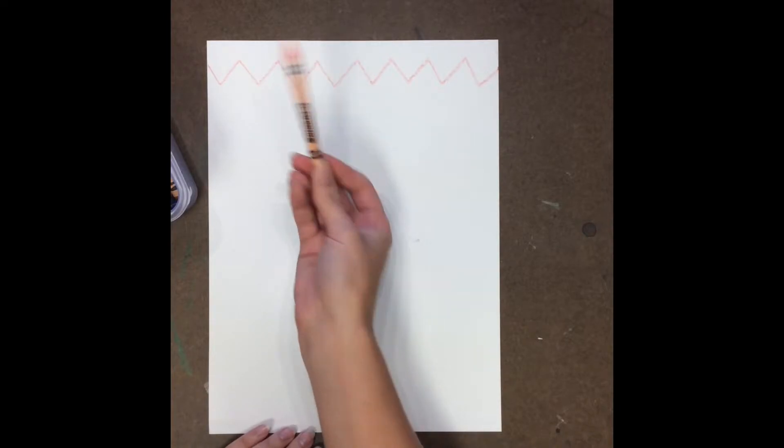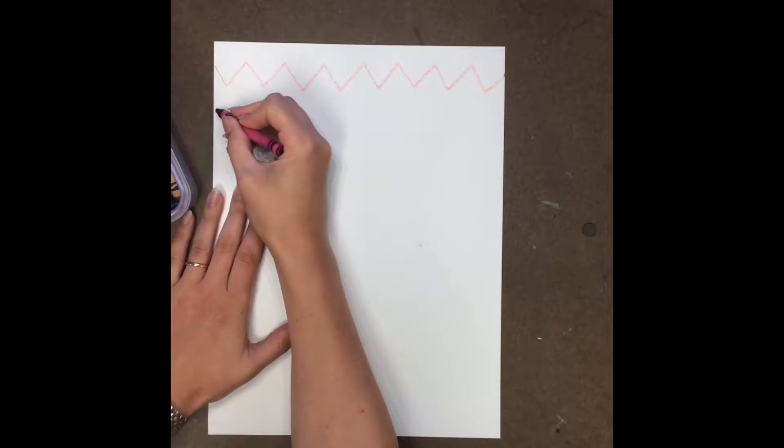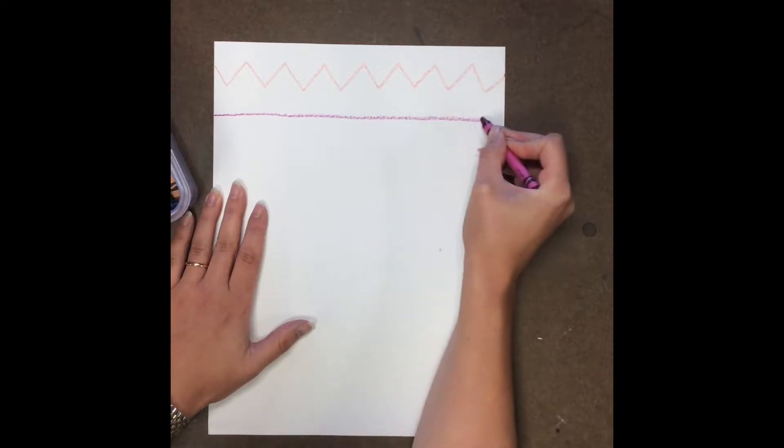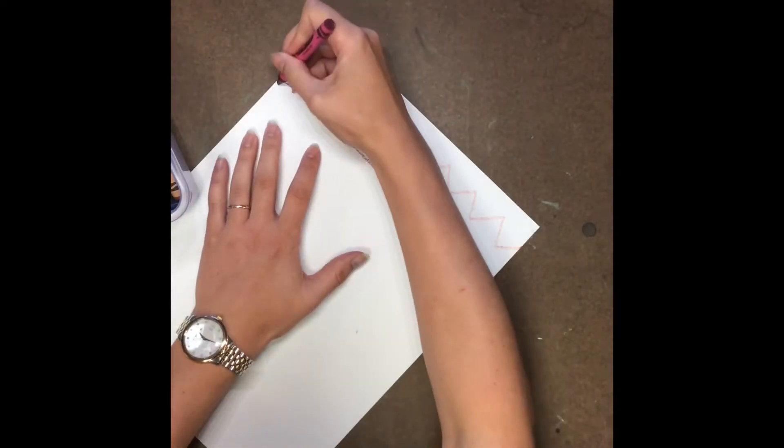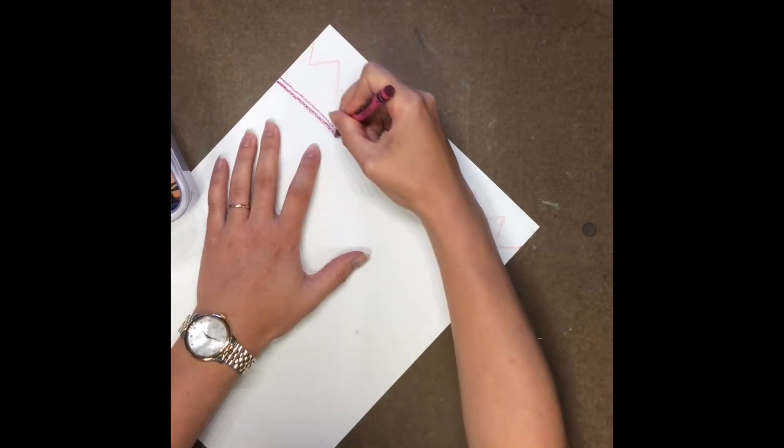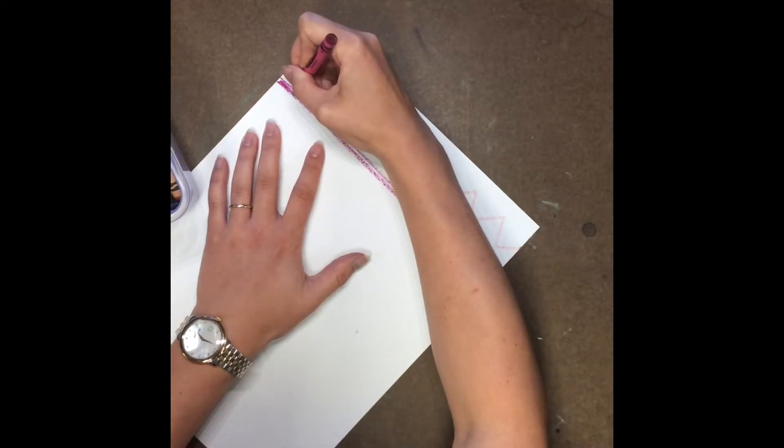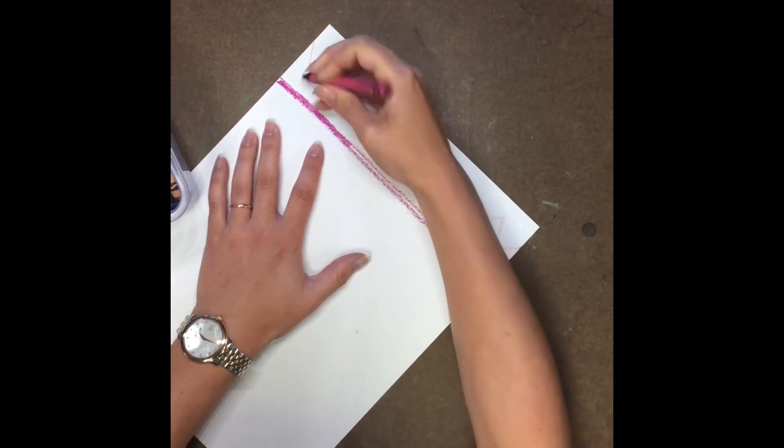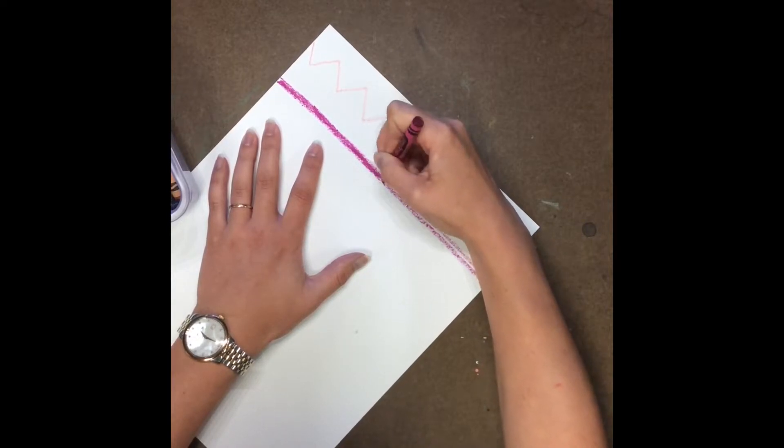So I'm probably going to change colors. And for my next line I'm going to do something totally different. So instead of zigzag this time I'm going to do straight. And instead of thin this time I'm going to make my line thick by coloring in. I'm pushing a little bit hard with my crayons so that my colors show up nice and bright.